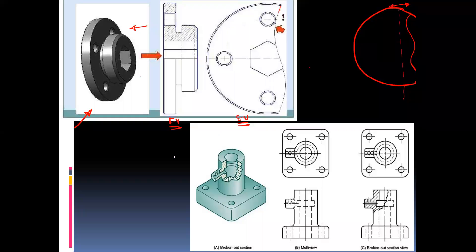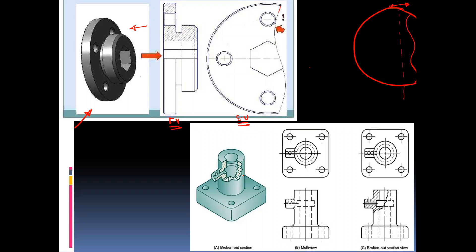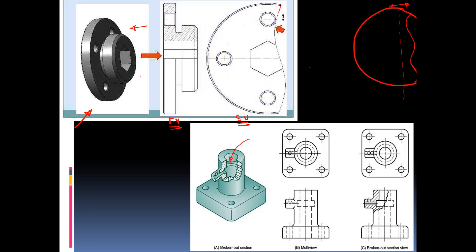The second use of the free end line is to show the cut section of a part. Suppose we want to show the internal structure — for example, a hollow cylinder. If we want to reveal the internal feature, we can take the cut section like this. So the representation of the cut section is done with the help of the free hand line.